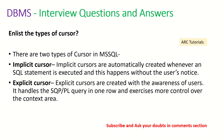There are two types of cursors: implicit and explicit. Implicit cursors are automatically created whenever a SQL statement is executed — the user is unaware of this. An explicit cursor is created with the awareness of the user; it handles PL/SQL queries one row at a time and exercises more control over the context area.